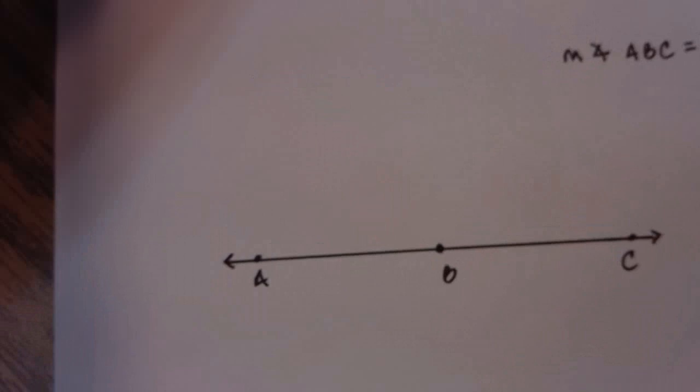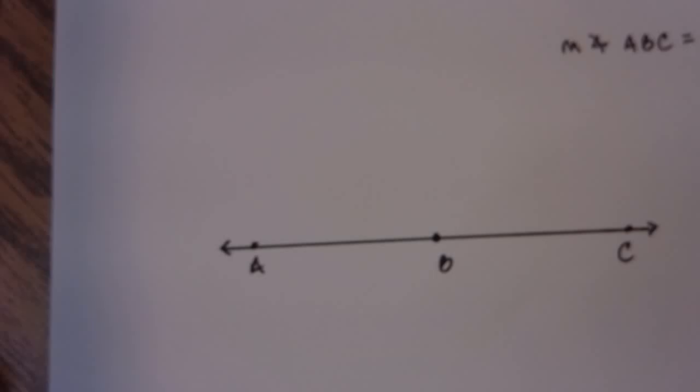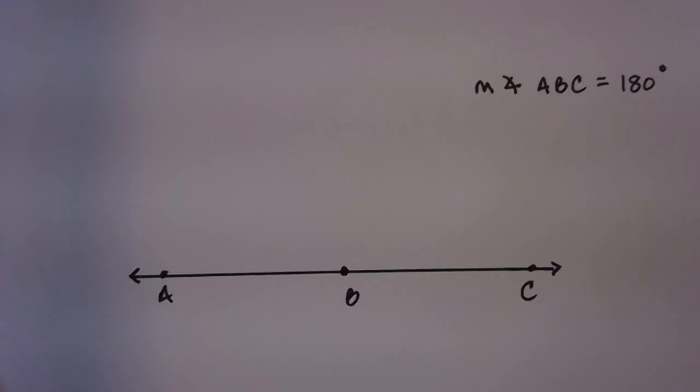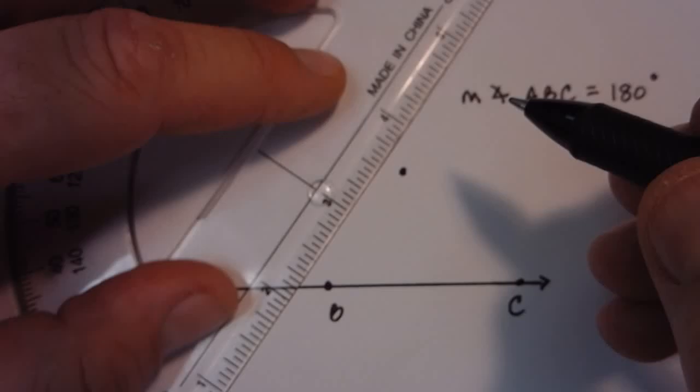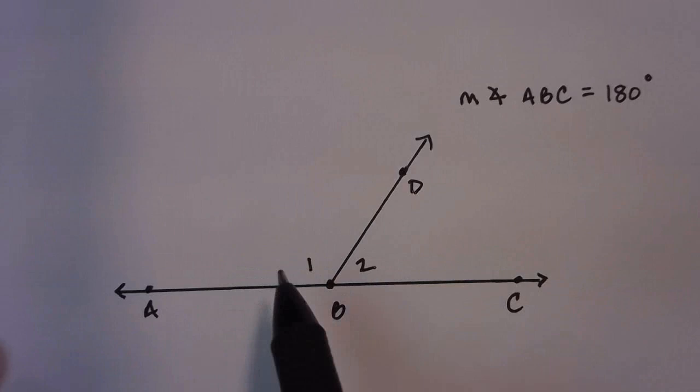You also have angle ABC that creates a straight angle. This angle is 180 degrees. So once again, if you had a third ray, and let's again call this point D, now if you notice, you've created two angles that make up this entire 180 degree angle.